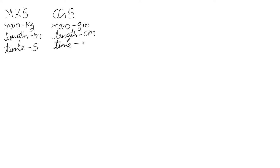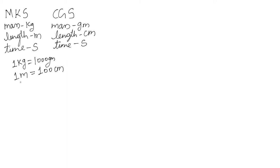You can relate the two unit systems by simple conversion factors. For example, one kilogram equals one thousand grams, while one meter equals one hundred centimeters. MKS is a bigger unit while CGS is a smaller unit. So if you want to express the mass of a feather, it's always a good idea to express it in grams instead of kilograms. You can always go from one unit system to another using these conversion factors.